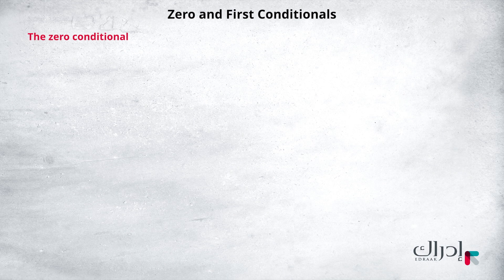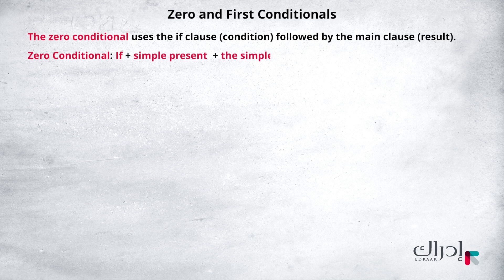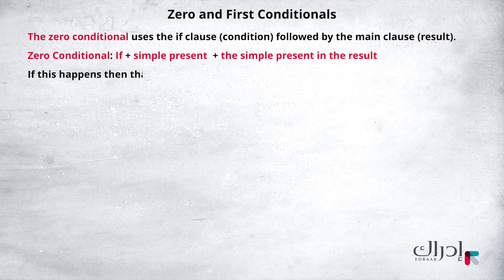This is the zero conditional, since it is factual. The zero conditional uses the if-clause condition, followed by the main clause result. So, if followed by the simple present, followed by the simple present in the result. In other words, if this happens, then that happens 100% of the time.